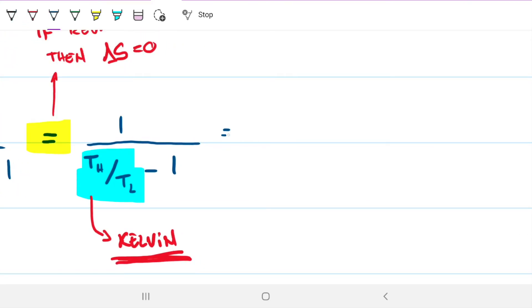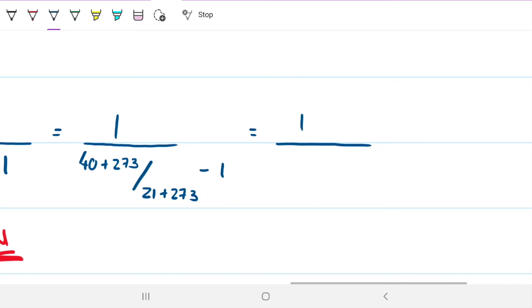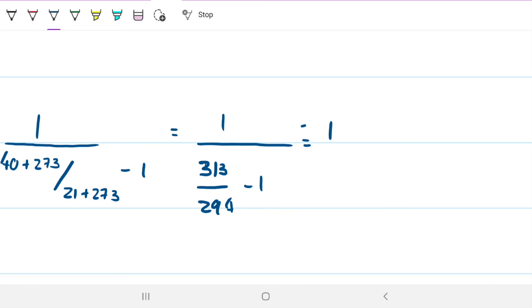So once we have that set up, then things are quite trivial because then we have our hot reservoir, which is 40, and then 273 to sum up with the Kelvin situation. Over here we have 21 Celsius plus the 273 minus 1. So that is easily converted into 313 divided by 294 minus 1. That gives me 15.47 approximately.